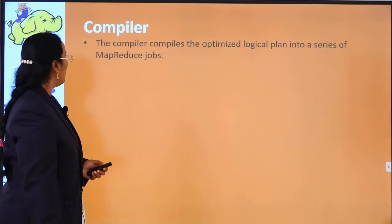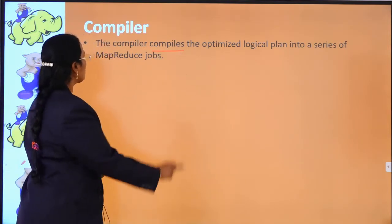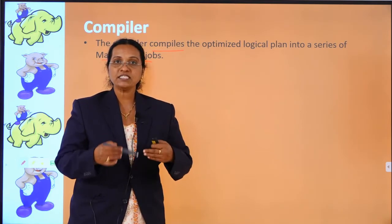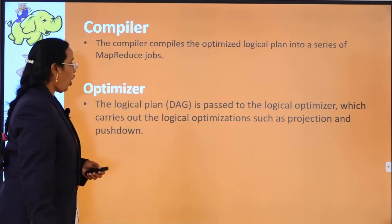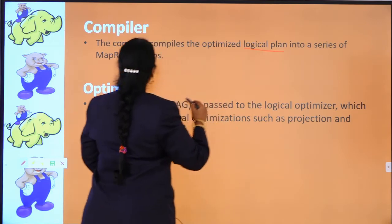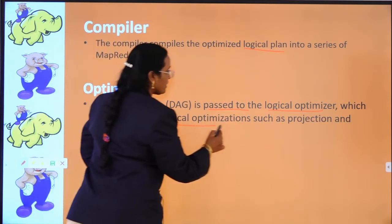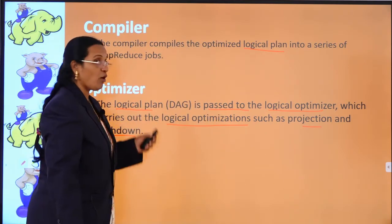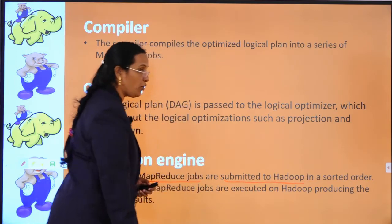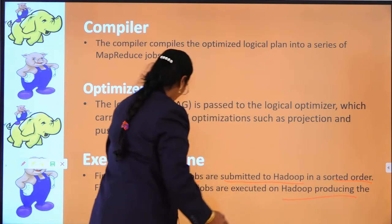The compiler compiles the optimized logical plan into a series of MapReduce jobs — a stepwise series. The optimizer takes the logical plan (the DAG) and carries out logical optimizations such as projections and pushdown operations. Finally, the execution engine submits the MapReduce jobs to Hadoop in sorted order, and those MapReduce jobs are executed on Hadoop, producing the desired results.